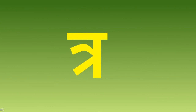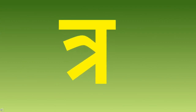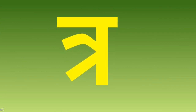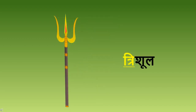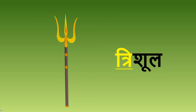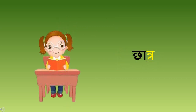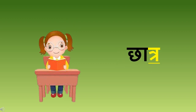Children, let's see words with Vyanjantra. Here we are going to see the highlighted letter. So let's start with Vyanjantra. This is Vyanjantra. Tra say Trishul. Tra say Chhatra. Chhatra means student.